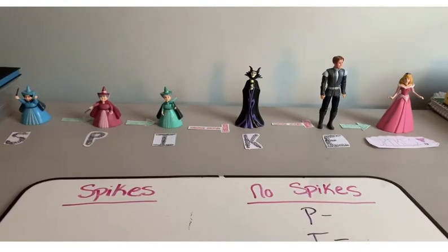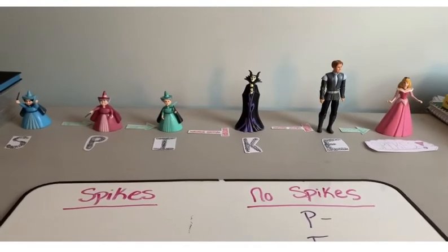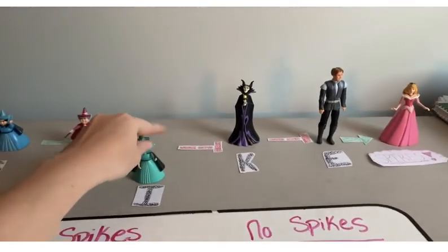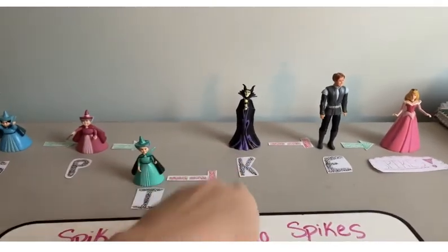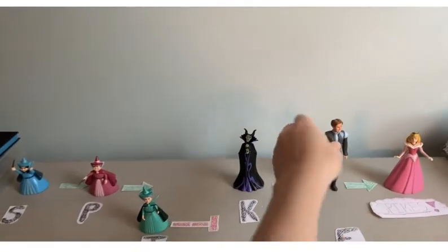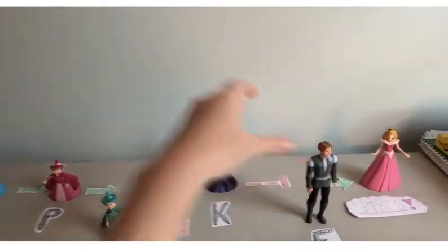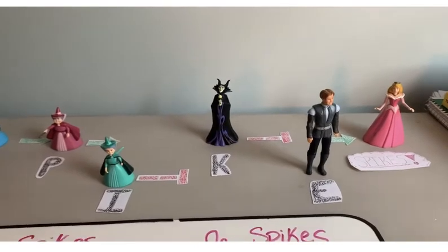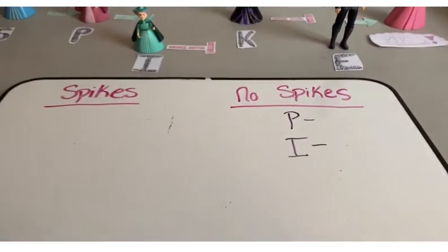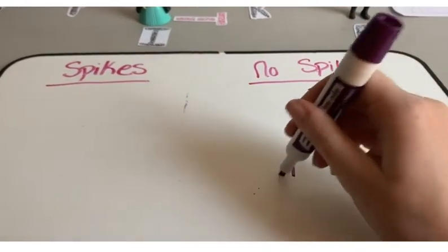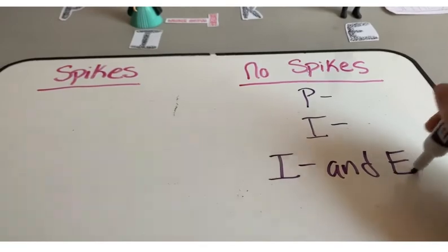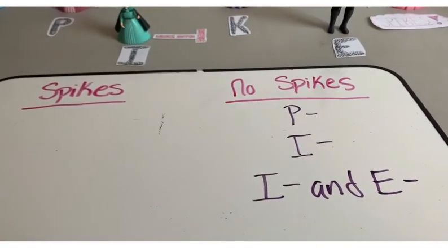Now, let's look at a mutant pathway that has two parts removed. If I, or the green fairy, is removed, she can't block Maleficent from blocking Prince Charming. But if Prince Charming is removed, then Maleficent can't block him. However, he was required to stimulate Aurora, so no spikes can be made. So I minus and E minus is under no spikes.